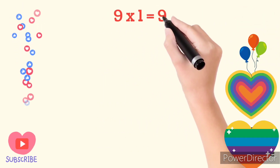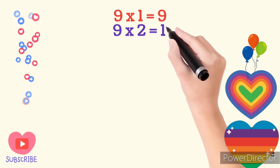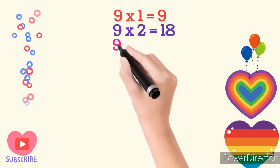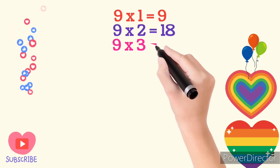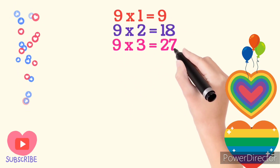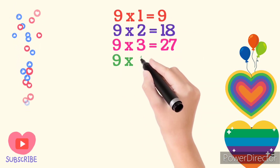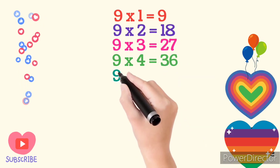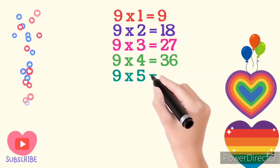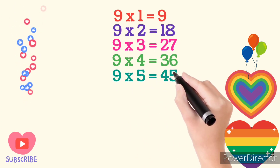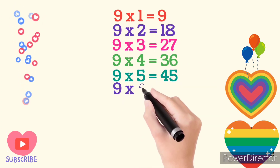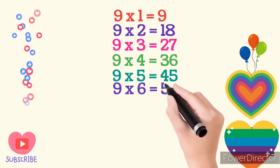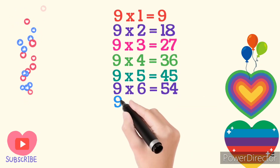9 times 1 are 9. 9 times 2 are 18. 9 times 3 are 27. 9 times 4 are 36. 9 times 5 are 45. 9 times 6 are 54.